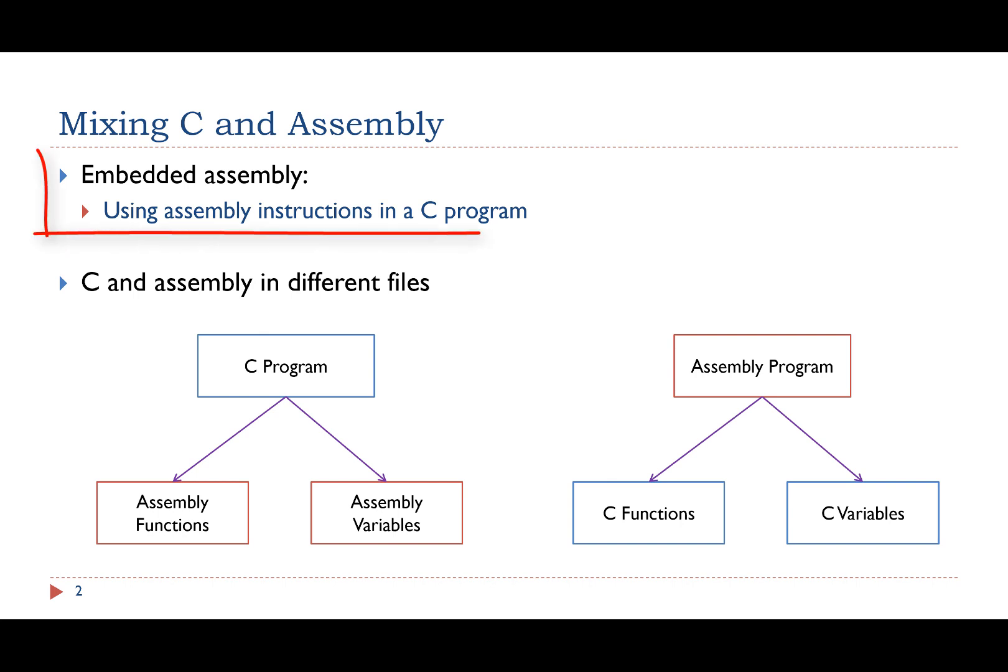We'll discuss two different scenarios. First, how to embed assembly code in a C program. Second, if C and assembly programs are in different files, how can they call each other?